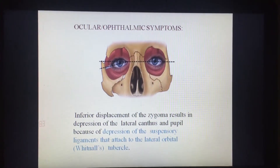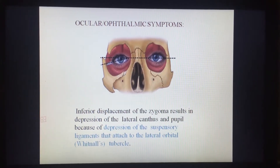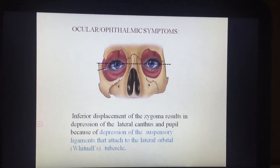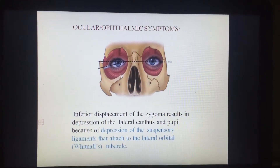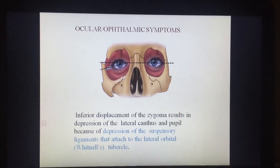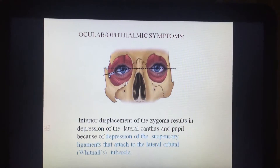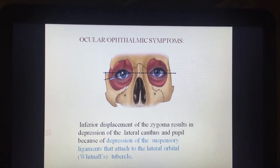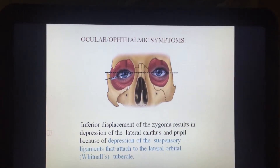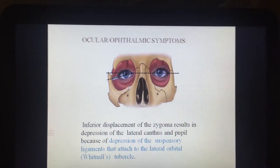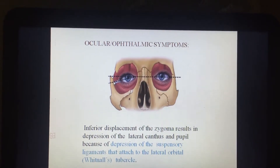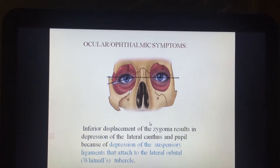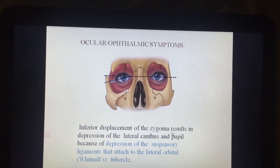Regarding ocular and ophthalmic symptoms, inferior displacement of the zygoma results in depression of the lateral canthus and pupil, because of depression of the suspensory ligaments that attach to the lateral orbital tubercle — the Whitnall's tubercle. In this image, the attachment of the Whitnall's tubercle and the suspensory ligament of Lockwood, which suspends the orbit, are shown. Whenever a fracture occurs in this region, the suspensory ligament is depressed and the ocular levels change.